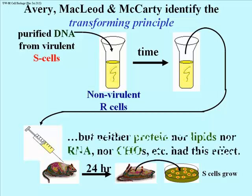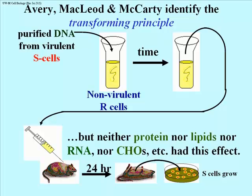The convincing thing was that when they purified either protein, lipids, RNA, or carbohydrates separately from the heat-killed S cell mixture and tried the same experiment — adding those in turn to non-virulent R cells — they had no effect. The mouse would survive a subsequent injection. So Avery and company concluded that the DNA from the S cells was the transforming principle.